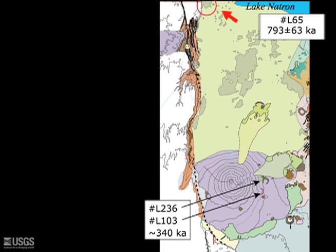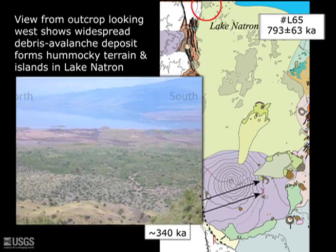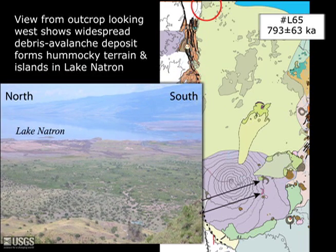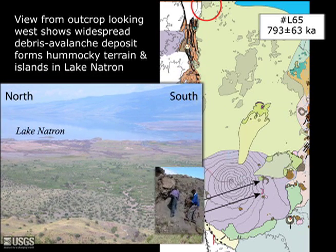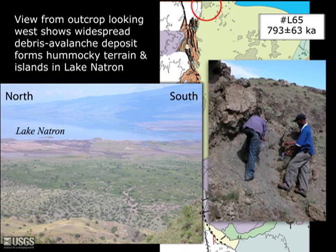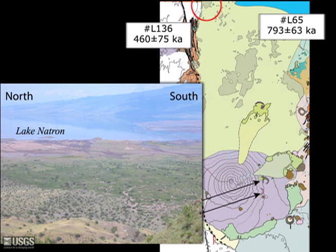We also found phlogopite within a tuff layer of a large block in younger debris avalanche deposits — the most widespread of the debris avalanches — equivalent to the zebra debris avalanche described by Matthew Kirwan and co-workers in a 2008 publication. That phlogopite age is 460,000 years.